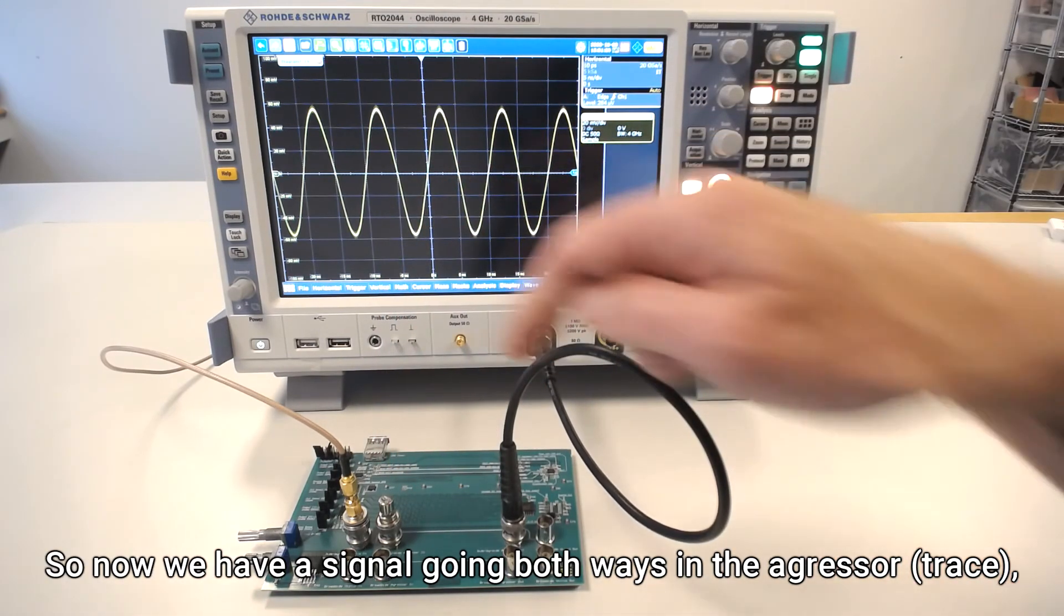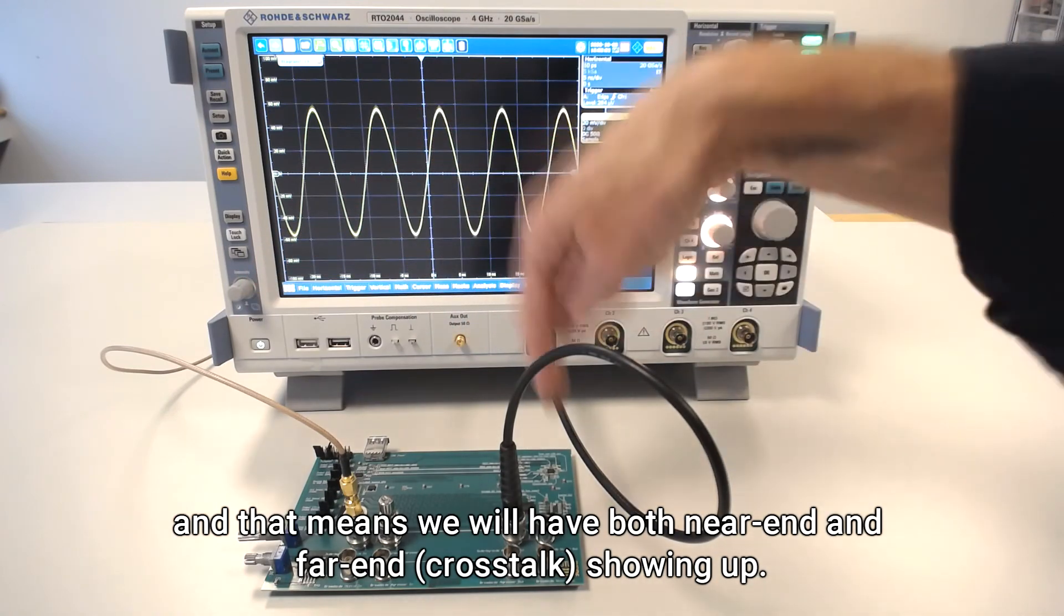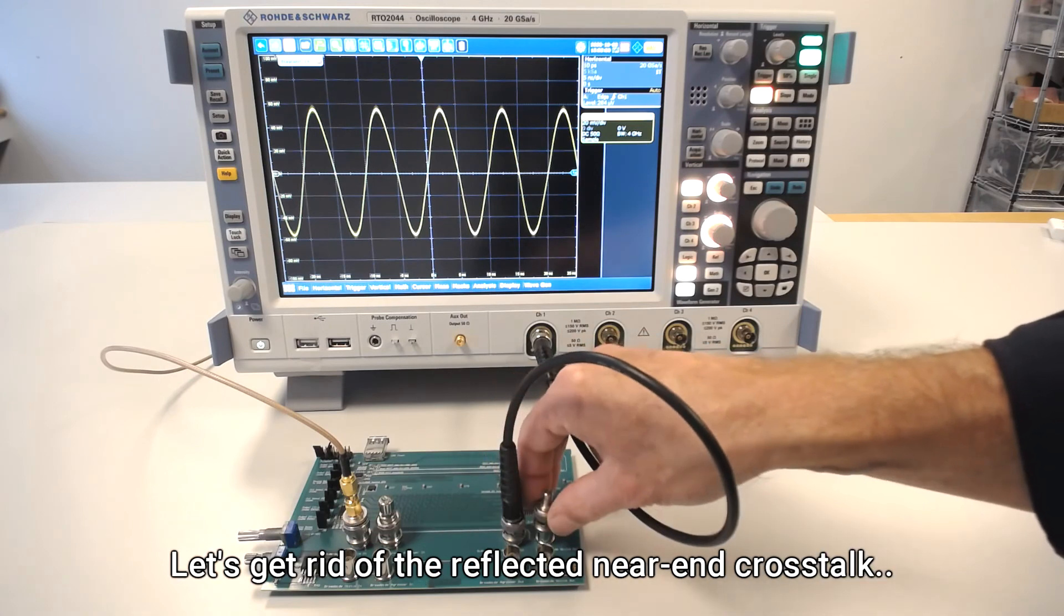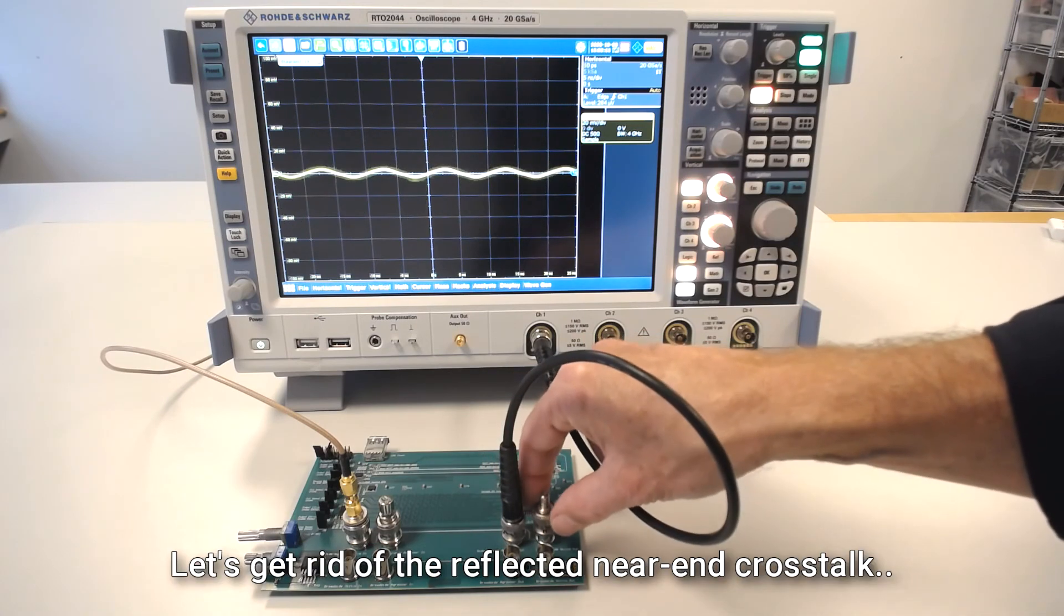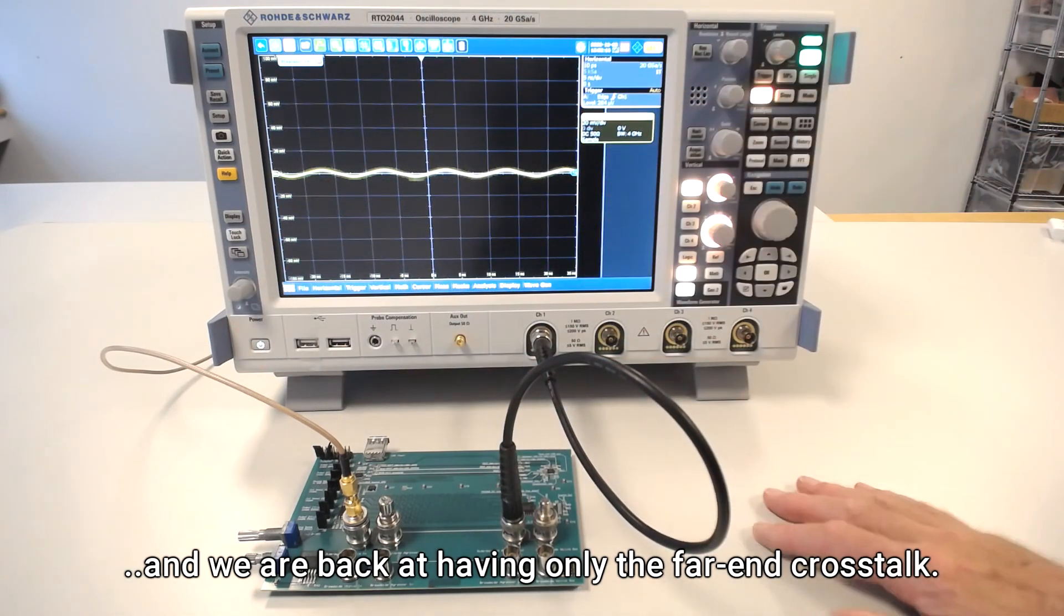So now we have a signal going both ways in the aggressor, and that means we'll have both far-end and near-end showing up. So let's get rid of the reflected near-end crosstalk, and we're back to only having the far-end crosstalk.